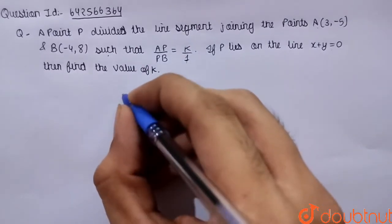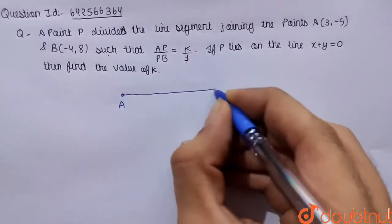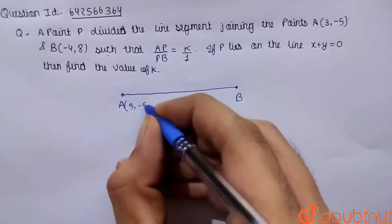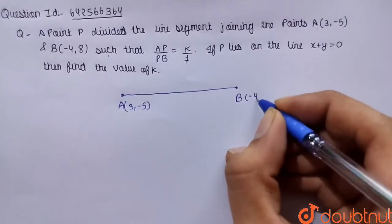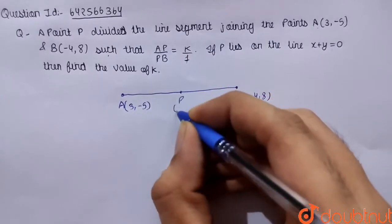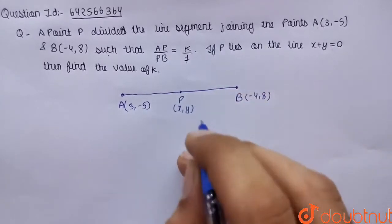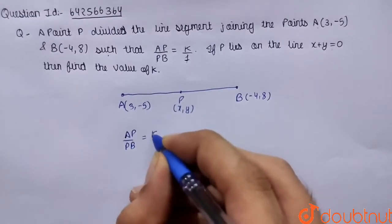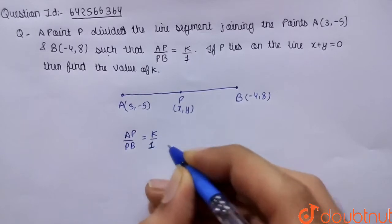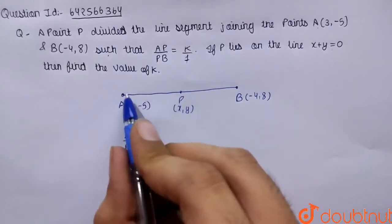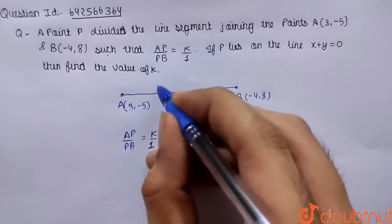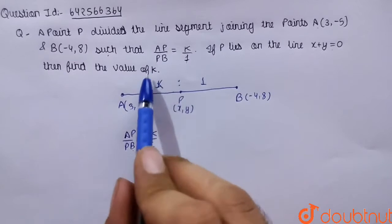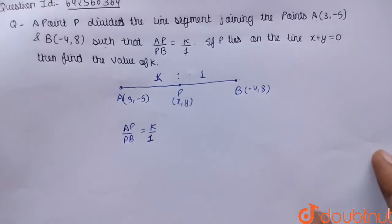So it is given that this is point A with coordinates 3 comma minus 5, and point B with coordinates minus 4 comma 8. We have to find the coordinates of P, say x comma y, such that AP by PB equals k by 1, which means the ratio is k is to 1.